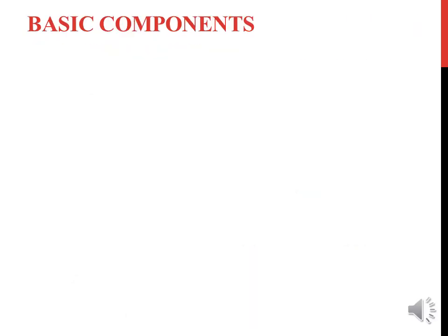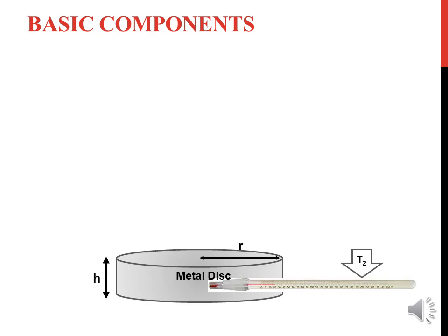The basic components in a Lee's disc apparatus are: first, the metal disc having a thickness h and a radius r. There is a provision in the metal disc where we insert a thermometer named T2. This thermometer is used to measure the steady state temperature of the metal disc and is also used to measure the various temperatures during the measurement for the rate of cooling.